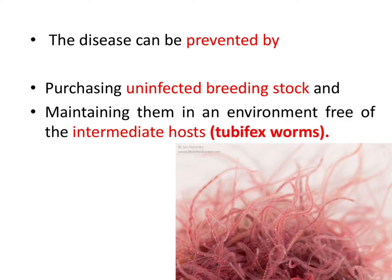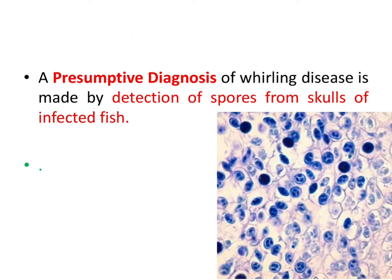The disease can be prevented by purchasing uninfected breeding stock and maintaining them in an environment free of the intermediate host, which is the tubifex worm. This is a picture of the tubifex worm — the intermediate host of Myxobolus cerebralis. A presumptive diagnosis of whirling disease is made by detection of spores from the skull of infected fish, as seen here.